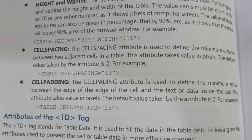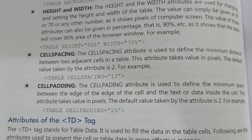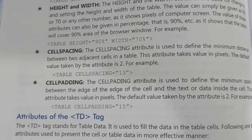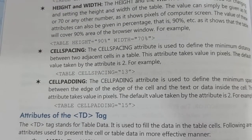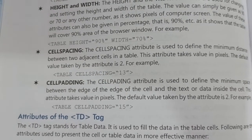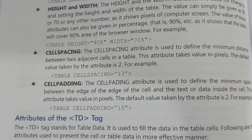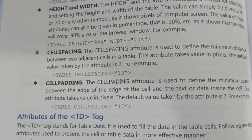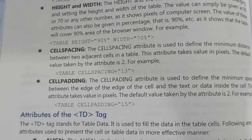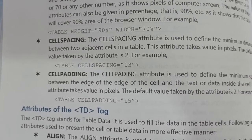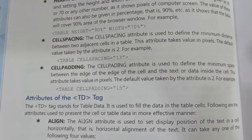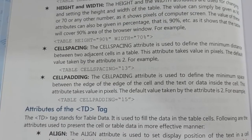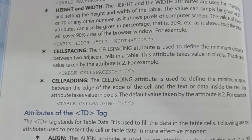The next attribute is cellspacing. This attribute is used to define the minimum distance between two adjacent cells in a table. This attribute takes a value in pixels. The default value is 2, but you can use any value. For example: table cellspacing equal to 13.